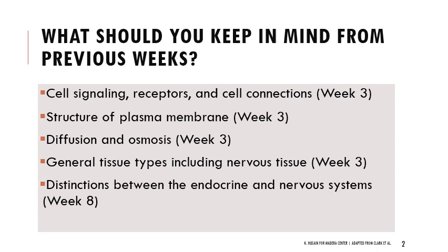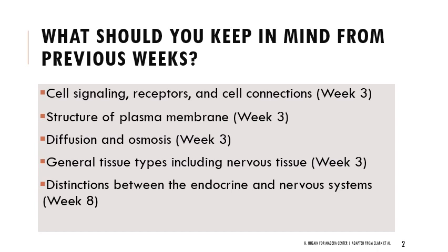Last week we covered the endocrine system, so I'll briefly remind you of differences between the endocrine and nervous systems. Back in week three we looked at the four general types of tissue: epithelial tissue, different types of connective tissue, muscle - including skeletal, smooth, and cardiac - and nervous tissue. Nervous tissue is what we're going to be focusing on today.